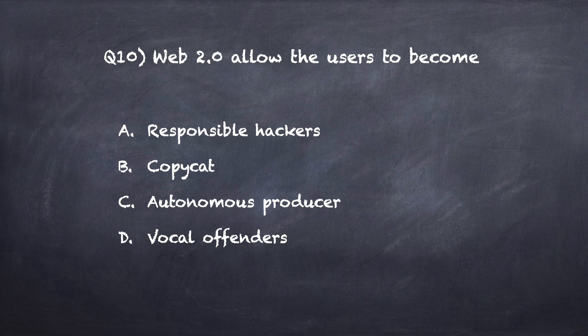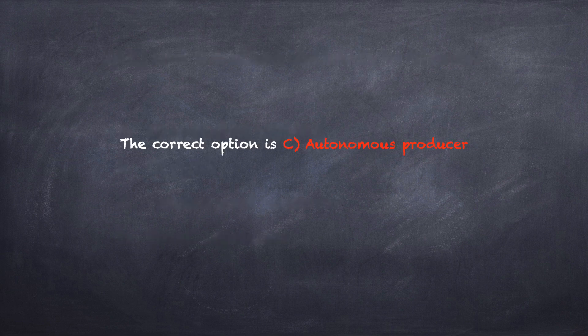Last question of the day, question number ten: Web 2.0 allows users to become? Option A: responsible hackers. Option B: copycat. Option C: autonomous producer. Option D: vocal offenders. The correct option is C, autonomous producer.